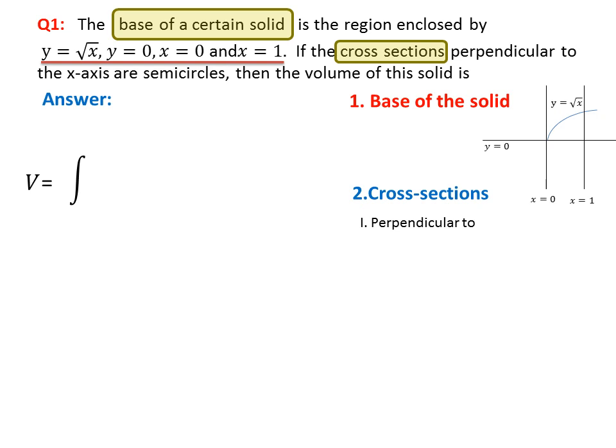From the cross-section, we need two pieces of information. First, the cross-sections are perpendicular to which axis? Here, the x-axis, so you will put dx in the volume. If they are perpendicular to the y-axis, you put dy. This is the first thing you can fill in the integral. Then you fill the lower and upper limits from the base of the solid, because the integration...